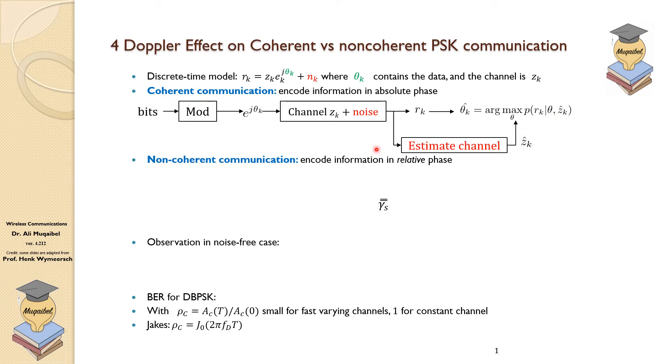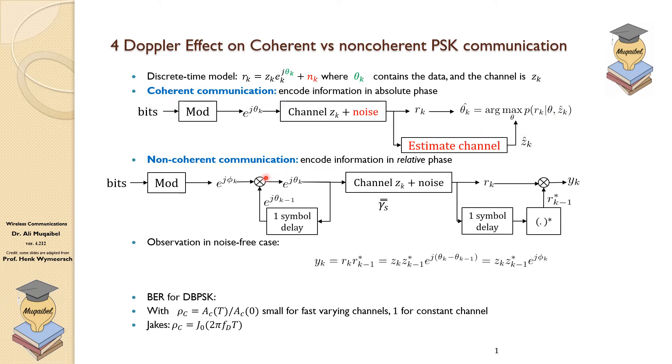For the case of non-coherent communication, we need to use differential PSK. So the bits will be modulated in the phase. And what we do, we compare the phase with the previous one, and then we transmit the data. That's differential phase shift keying, differential DPSK. And then it goes again through the channel. The channel will have Z_k, and there is going to be noise.